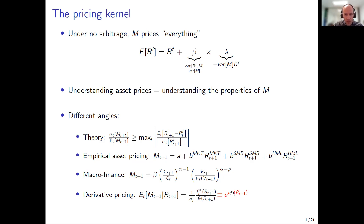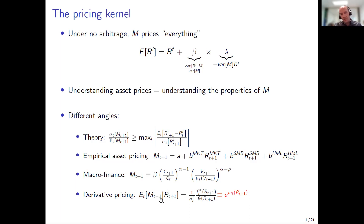I'll use the notation 'm' to denote the log of the projected pricing kernel. In this paper we do two things. First, empirically, we follow a relatively standard approach of measuring this, but pay very particular attention to the conditioning time t — where the volatility will live — and argue that the shape of the pricing kernel changes substantially as a function of volatility. Second, we take this finding and try to learn something about the mechanisms of equilibrium models by projecting their kernels onto returns the same way we do in the data.